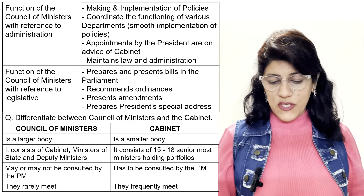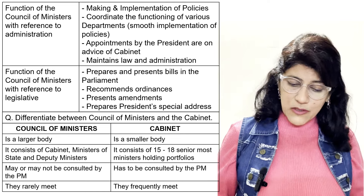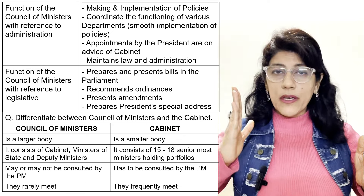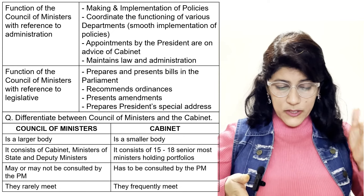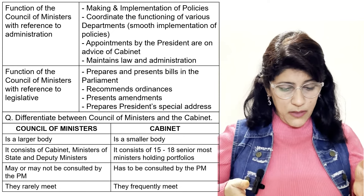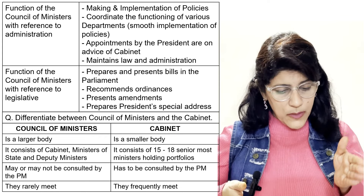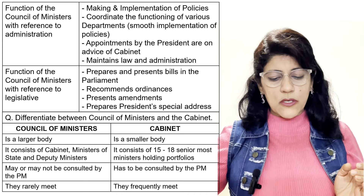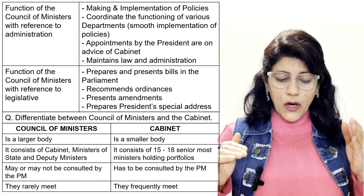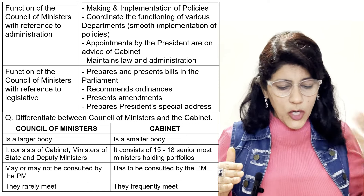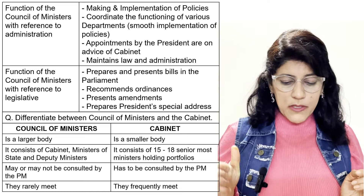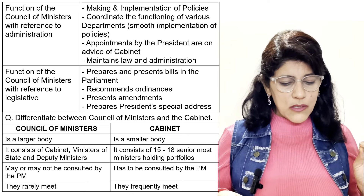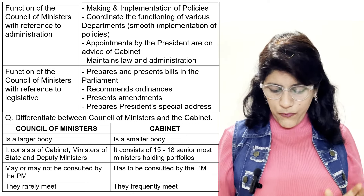Difference between Council of Ministers and Cabinet: Council of Ministers is a large body; Cabinet is a smaller body. Council of Ministers consists of cabinet ministers, ministers of state, and deputy ministers. Cabinet consists of 15 to 18 senior-most ministers holding portfolios. Council of ministers may or may not be consulted by the Prime Minister, but cabinet ministers must be consulted. Council of ministers rarely meets, but the cabinet meets frequently.